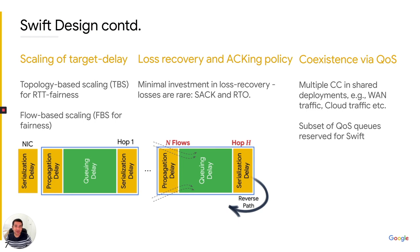Swift is deployed at Google in heterogeneous deployments. We have WAN using its own congestion control and cloud traffic where cloud customers can use the CC of their choice. To isolate Swift traffic, we leverage CoS queue features available in most commercial switches, reserving a subset of CoS queues solely for Swift traffic. With this I hand off to my co-presenter Nandita.